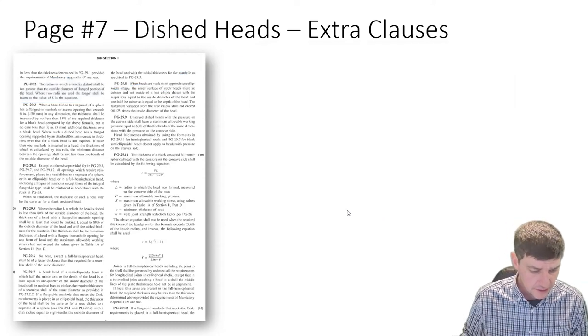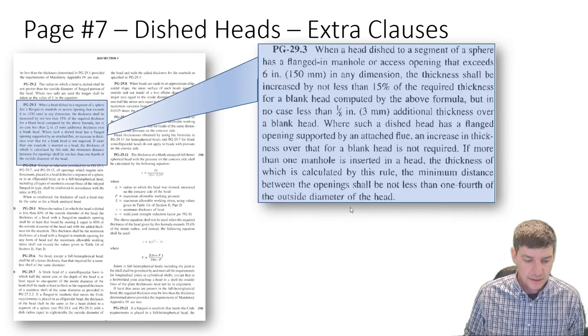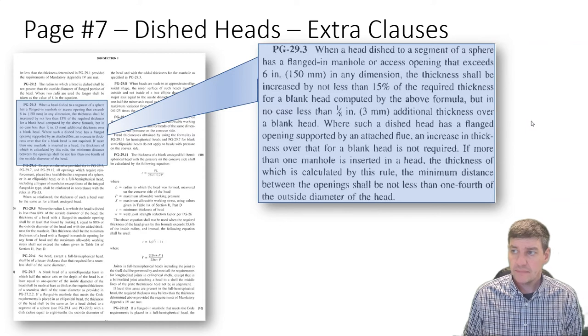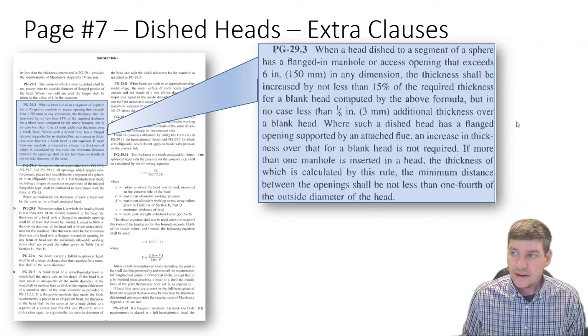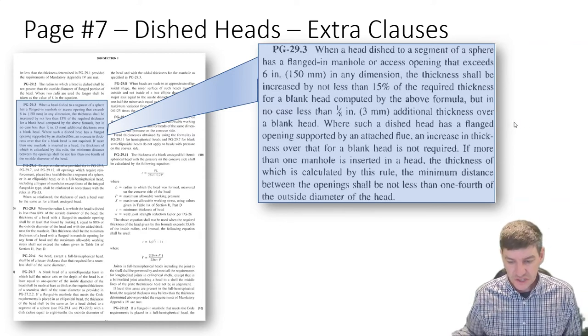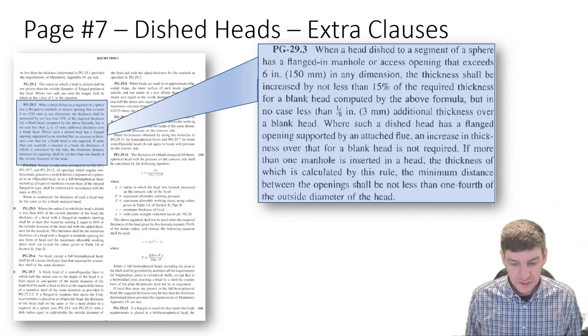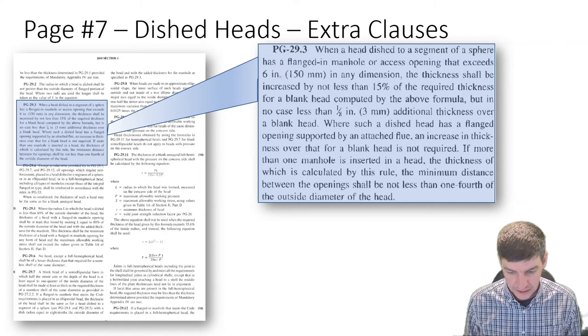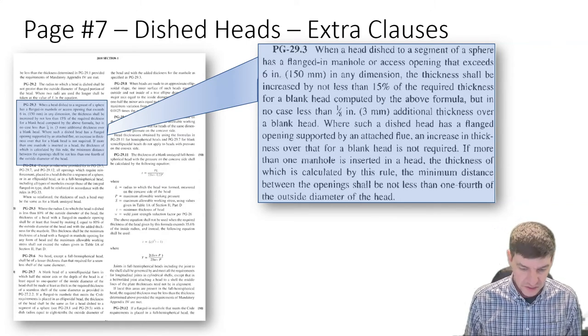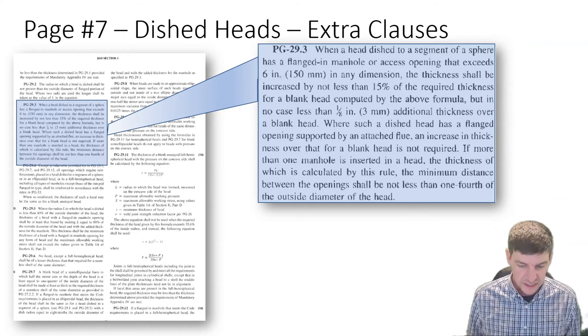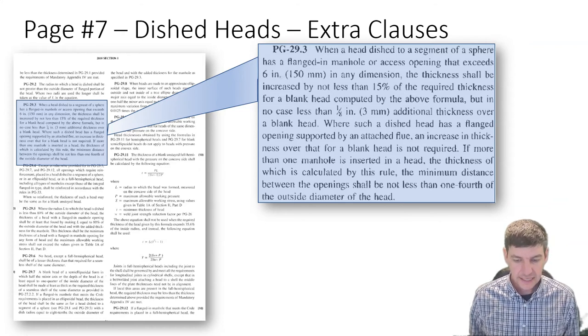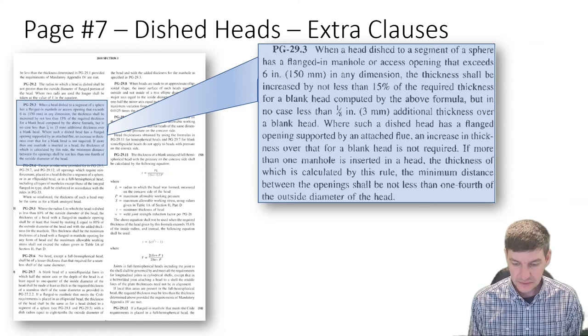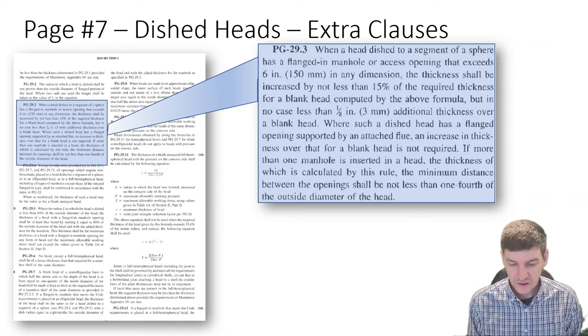We have another clause here, PG 29.3. This is one of the manhole clauses. We have a head that's dished to a segment of a sphere, a dished head with a flanged manhole or access opening. The thickness shall be increased by not less than 15% of the required thickness for a blank head computed by the above formula, but in no case less than 3 millimeters additional thickness over a blank head.